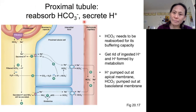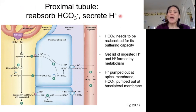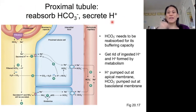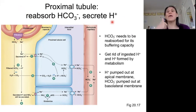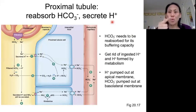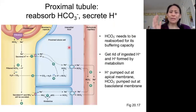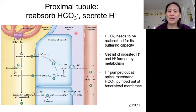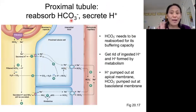That's why we're reabsorbing bicarbonate here in the proximal tubule. We secrete hydrogen ion because we have a natural tendency to acidify based on our metabolism, and because we're usually ingesting acids — or more acids than bases. So we're just going to automatically get rid of some hydrogen ion here in the proximal tubule.